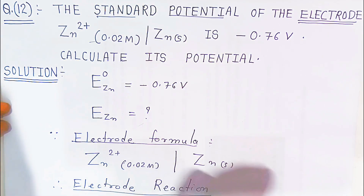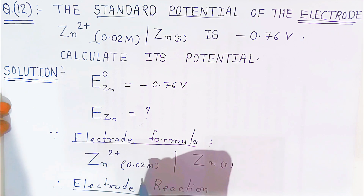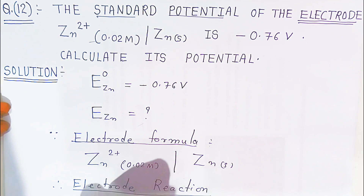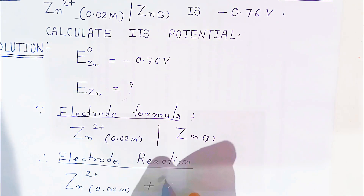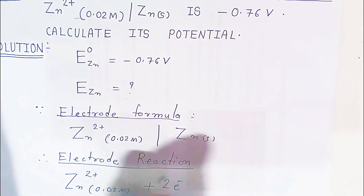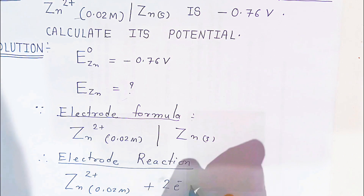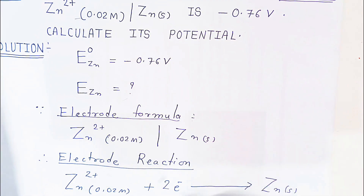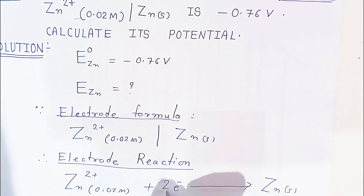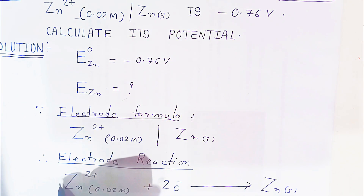For the electrode reaction: zinc 2+ at concentration 0.02 molar will accept 2 electrons — because it is 2+ — and convert into zinc solid. The number of moles of electrons transferred is 2, since to reduce one mole of zinc 2+ we need 2 moles of electrons.